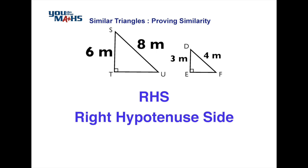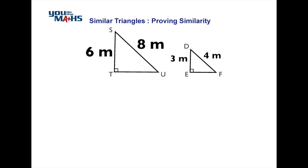Here we're looking at the similarity condition called right-hypotenuse-side. As the title suggests, we're looking for a right angle, the hypotenuse of a right-angle triangle, and one other side to compare them for similarity. First, we identify that both triangles share a right angle — one at angle STU and one at angle DEF.